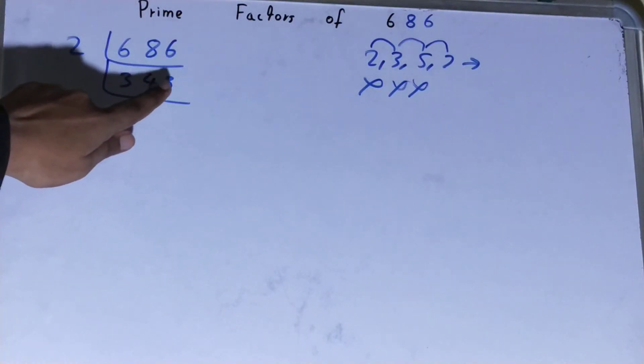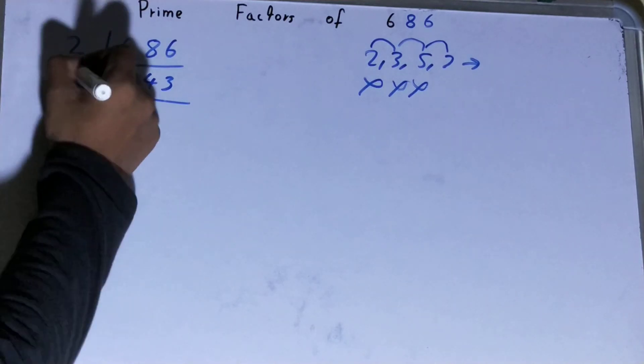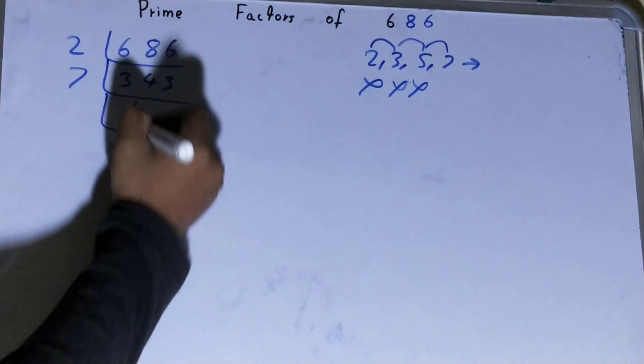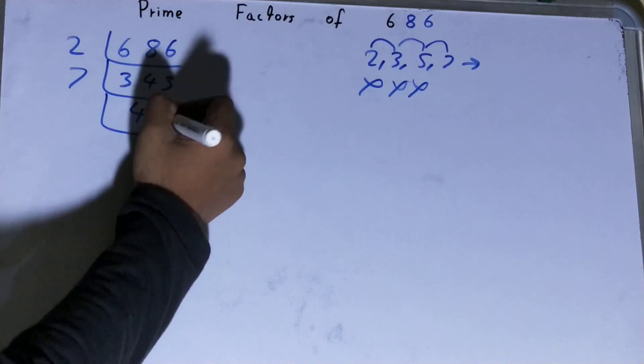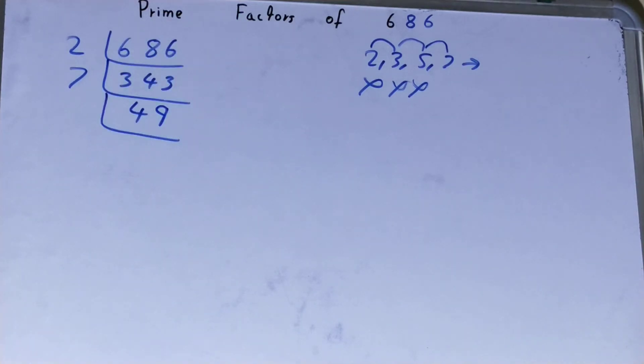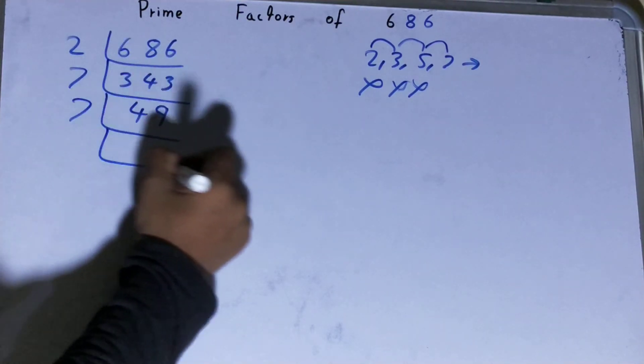7 fours are 28, yes, it is divisible by 7. So divide it. 7 fours are 28, 7 nines are 63. Now this 49 is also divisible by 7, so divide it.